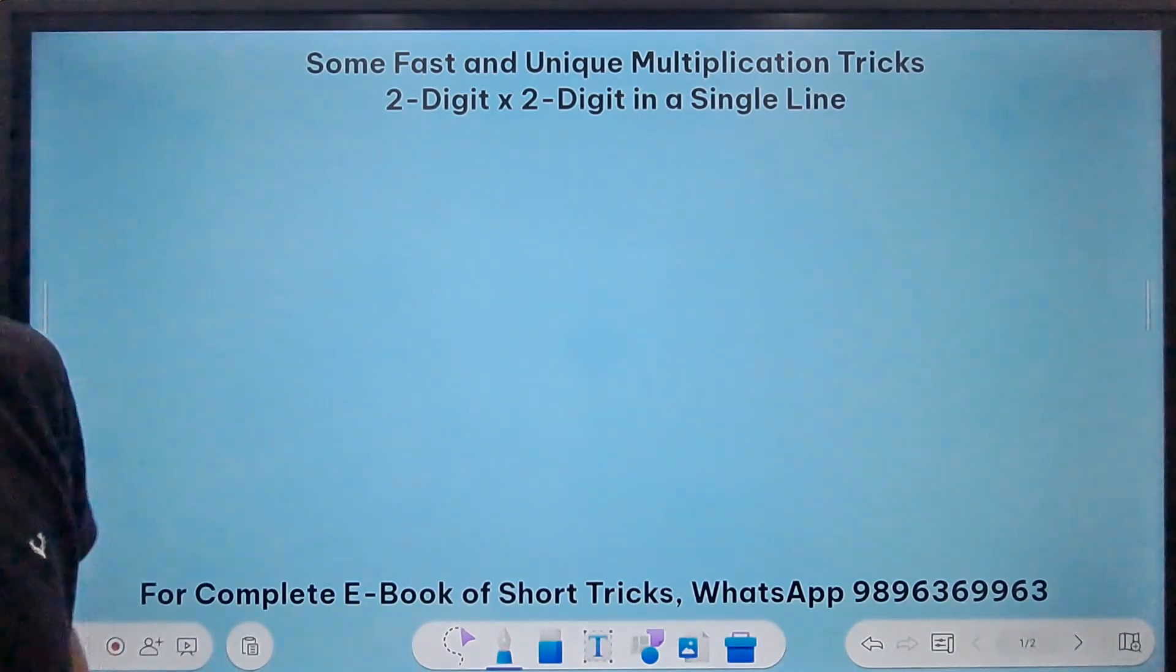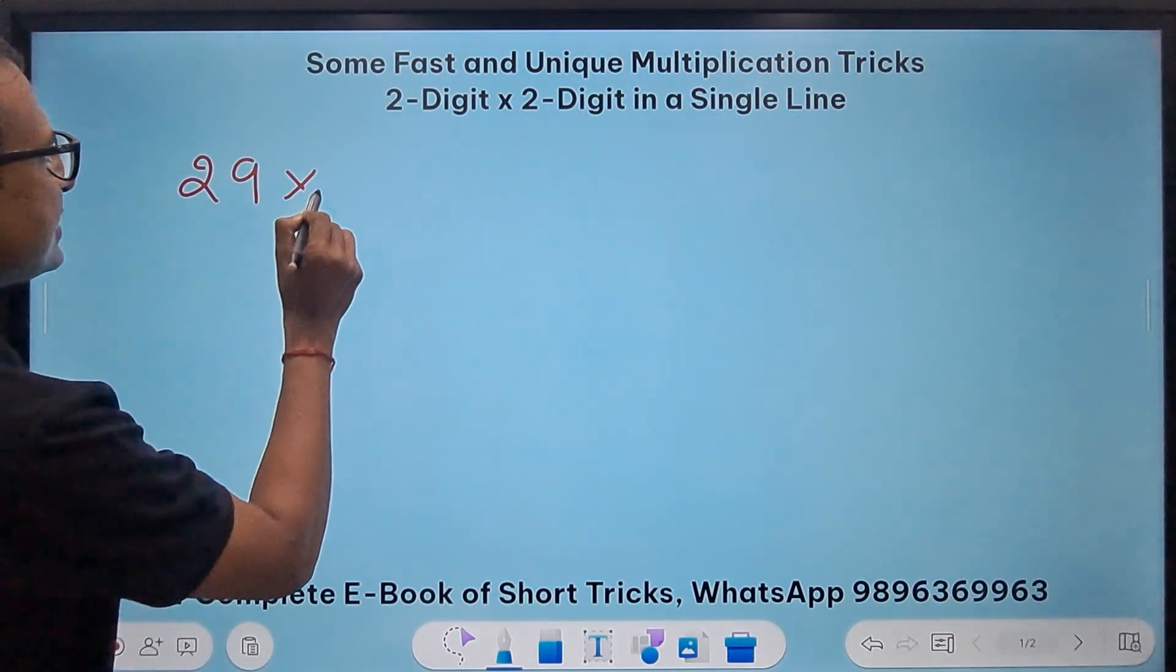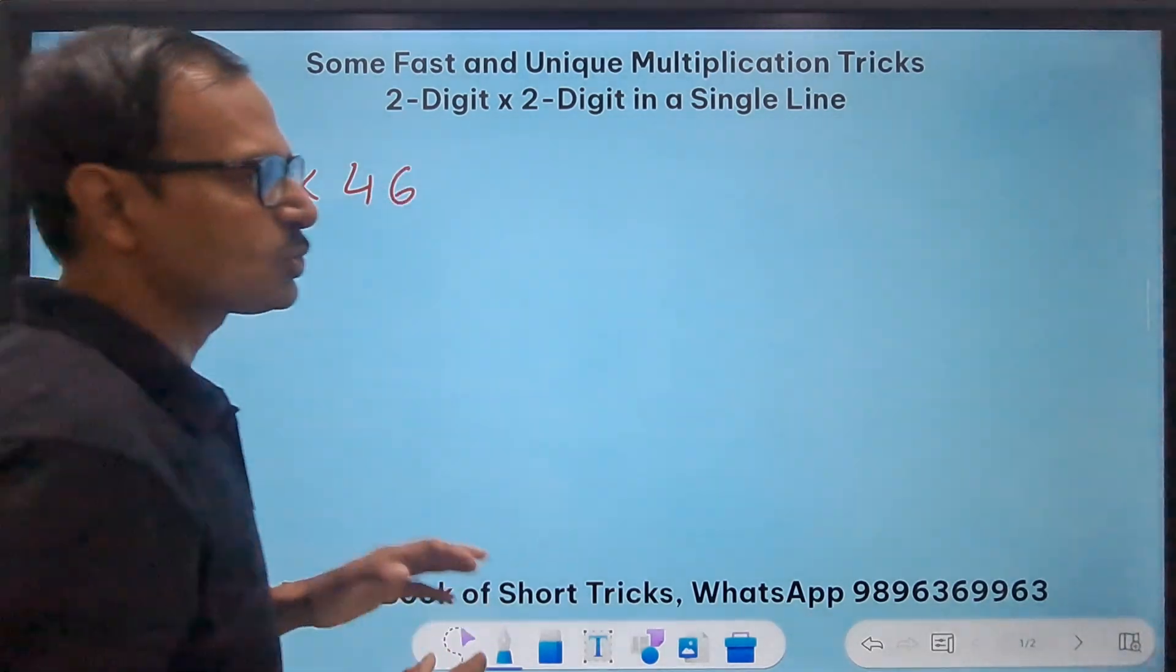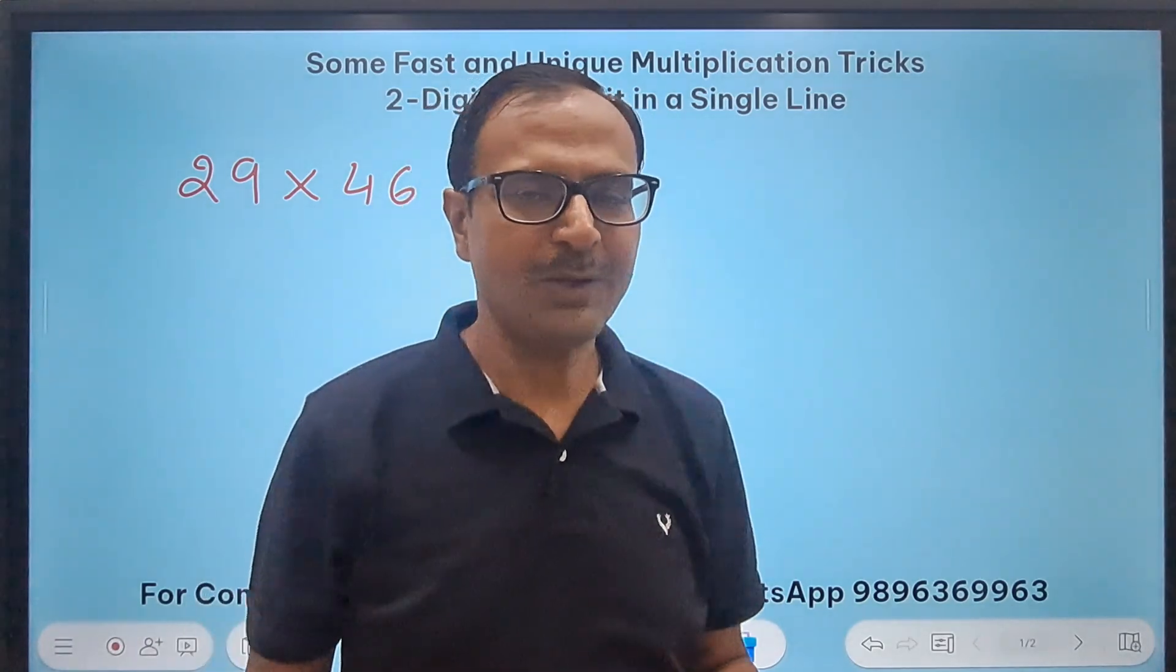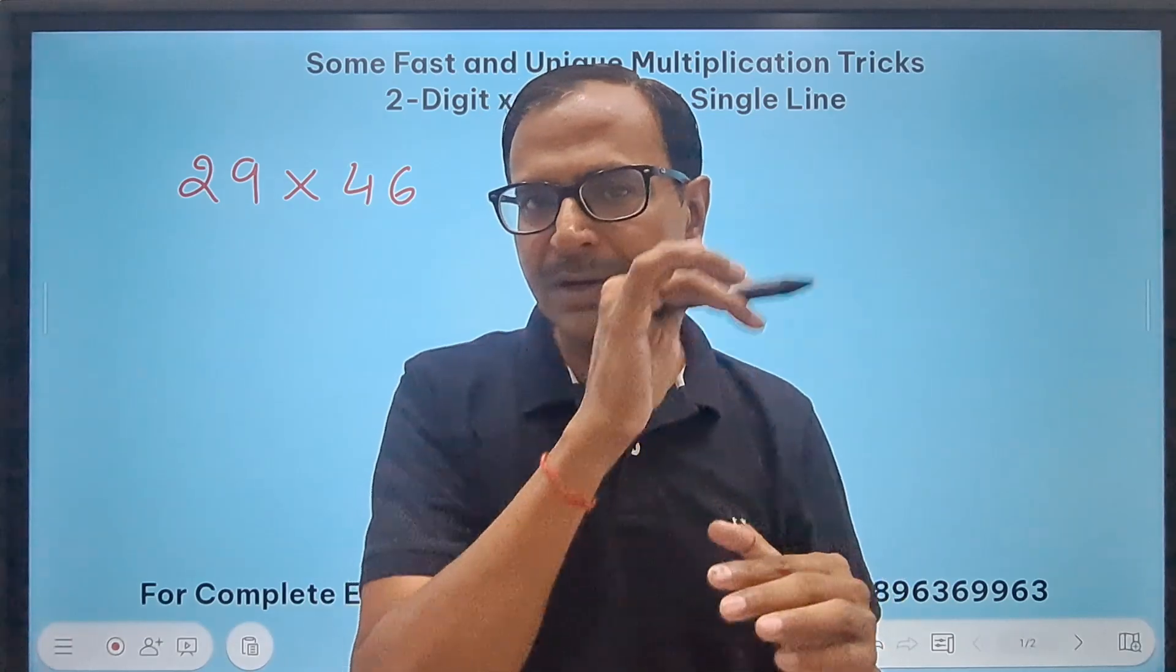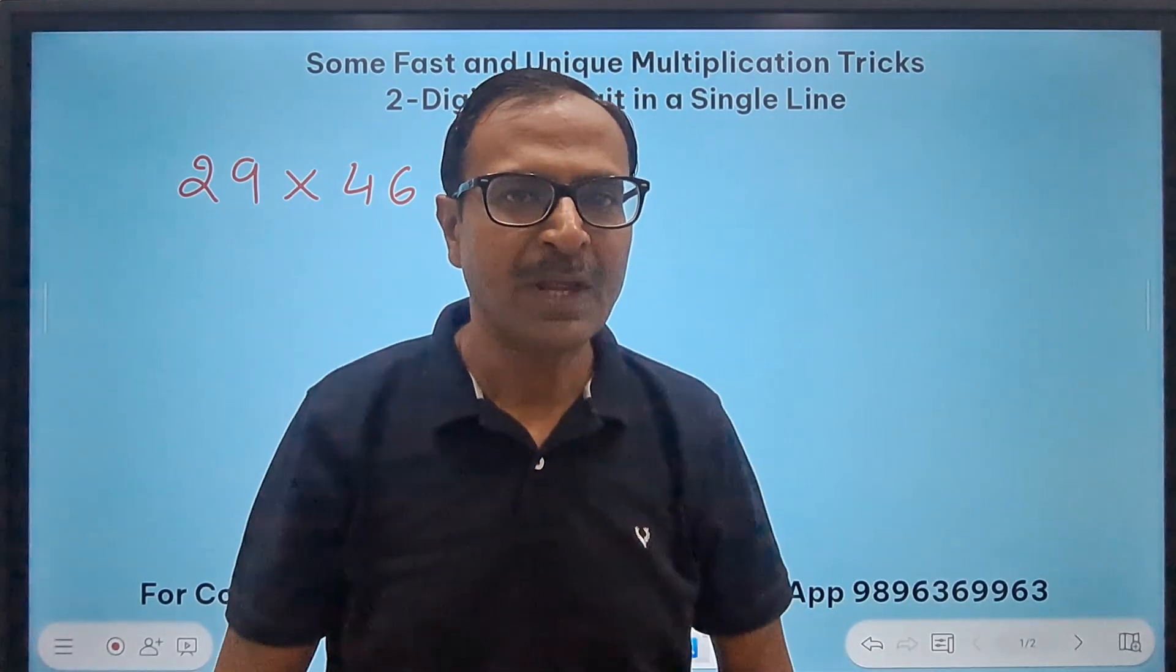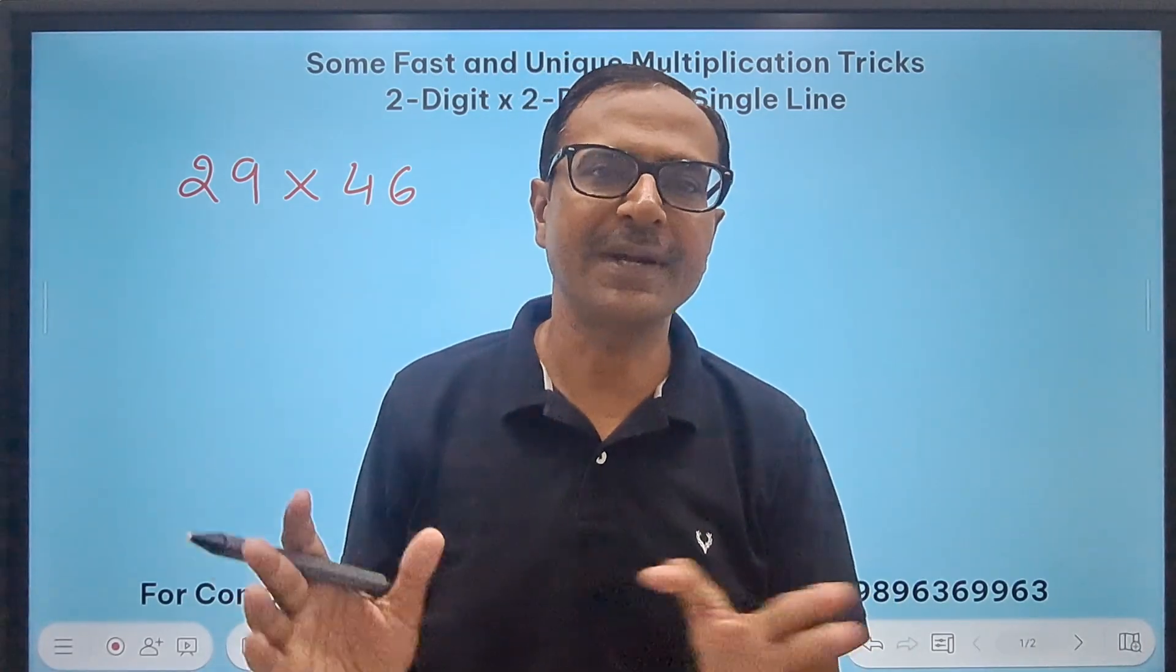The first example I'm going to take up is 29 times 46. Now we don't have to write these two numbers one below the other. So vertically and crosswise, most of the students will write them one below the other and then they will do the vertically and the crosswise method.